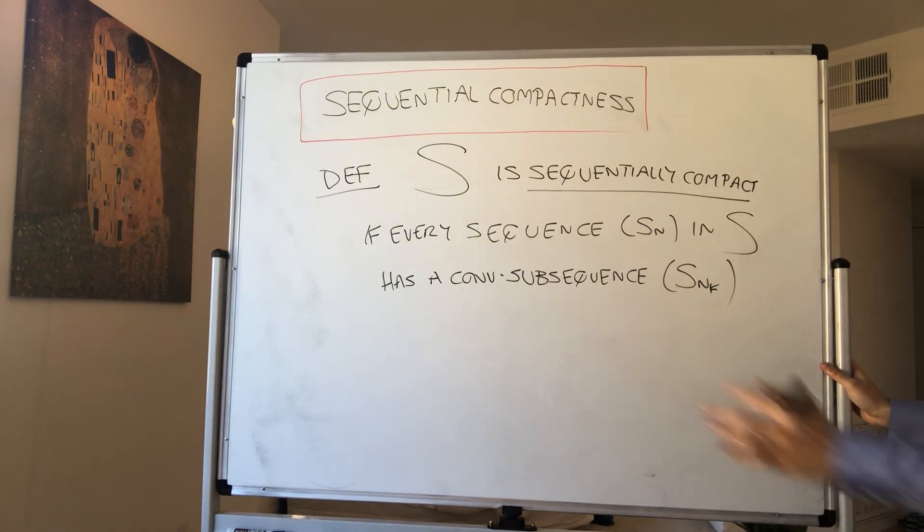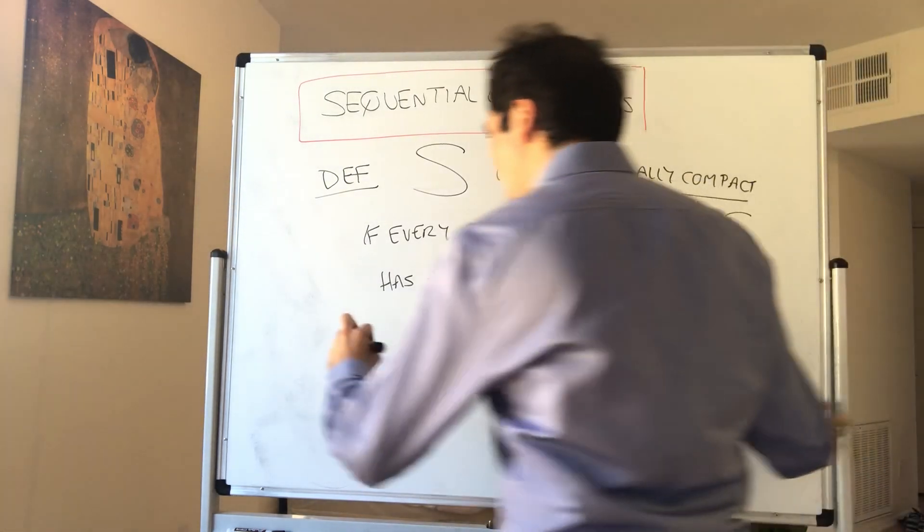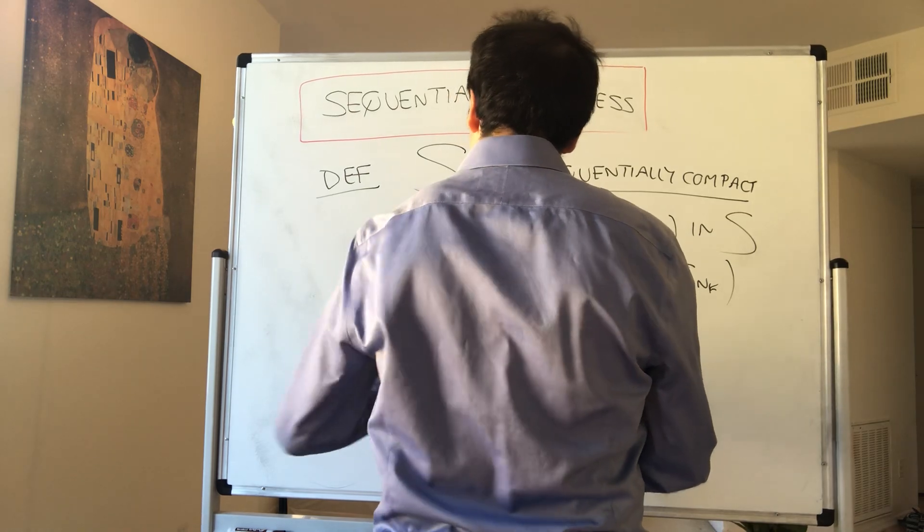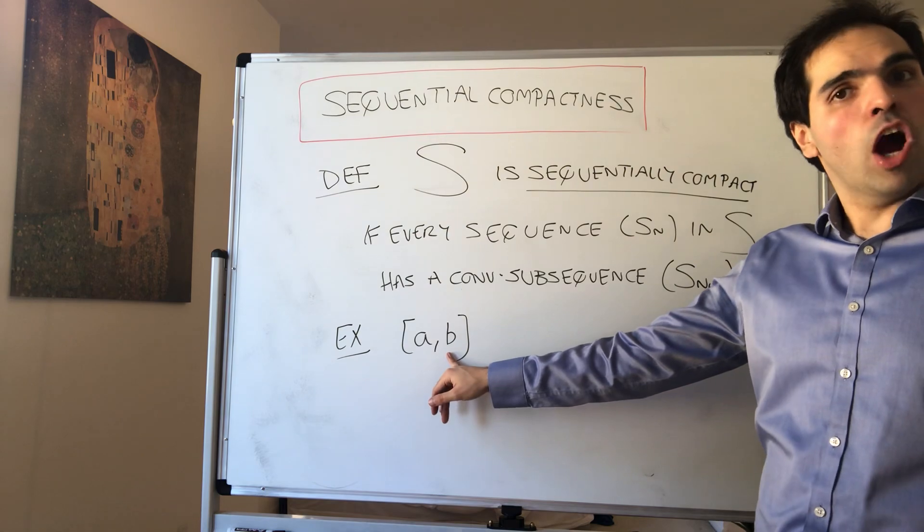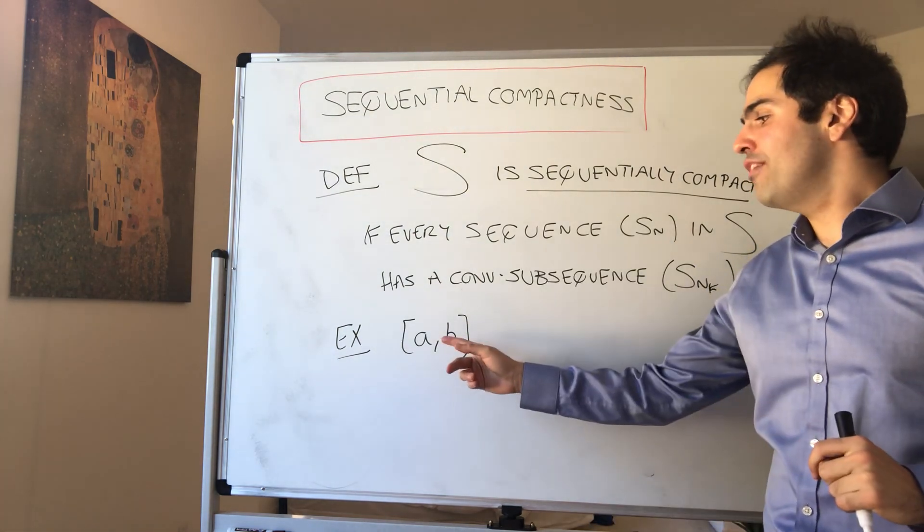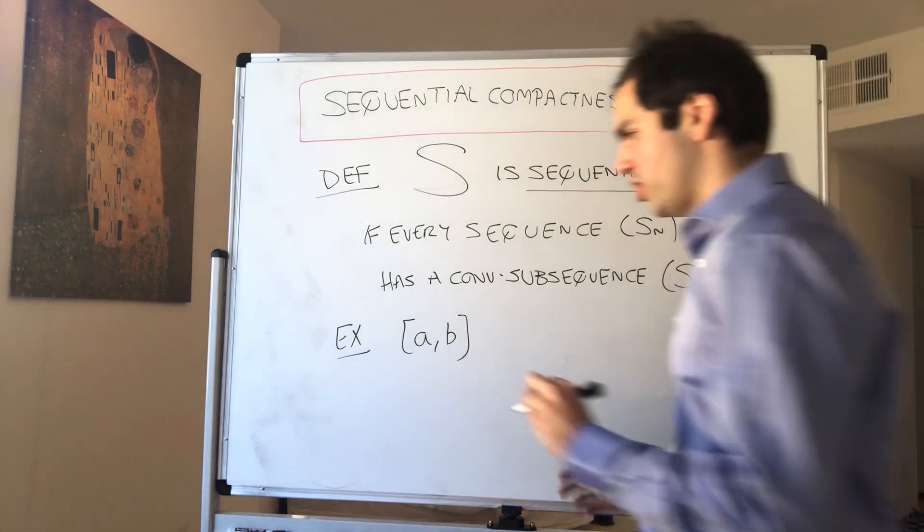So for instance, what's an example of a sequentially compact set? Well, in the real numbers, the closed interval [a,b] is sequentially compact, because if you're in a sequence in [a,b], then by Bolzano-Weierstrass you have a convergent subsequence, and that's exactly what you wanted to show.